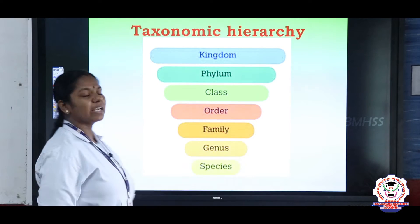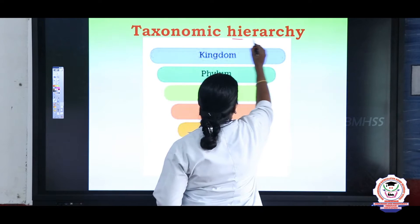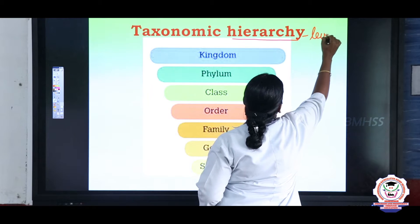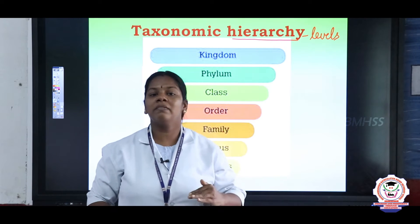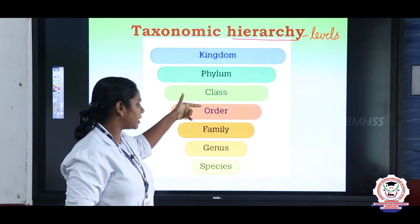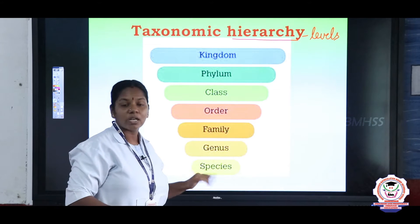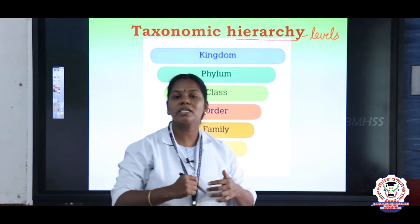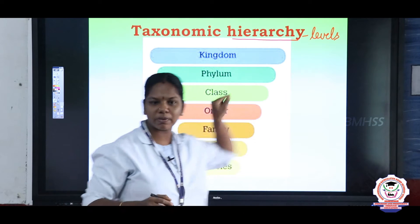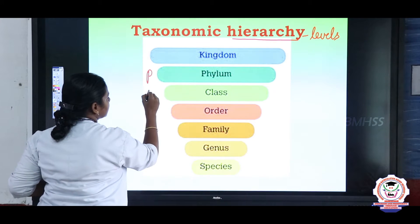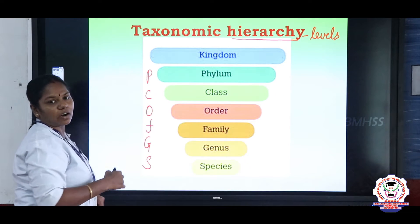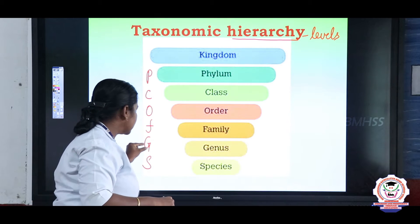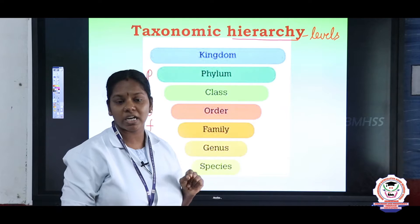In this session we are going to discuss the hierarchy of classification. Hierarchy means levels. There are various levels of classification and five important levels are kingdom, phylum, class, order, family, genus, and species. While classifying any organism, we should not change this order. I will give you a small trick to keep in mind: 'PCO for girls' — phylum, class, order, family, genus, and species.